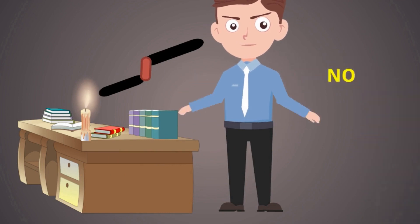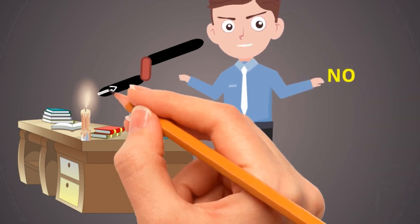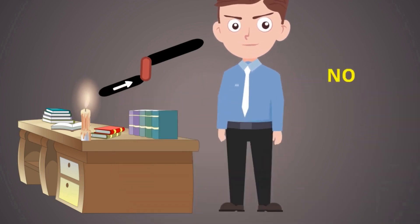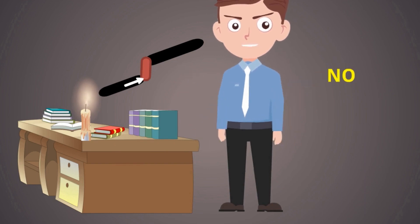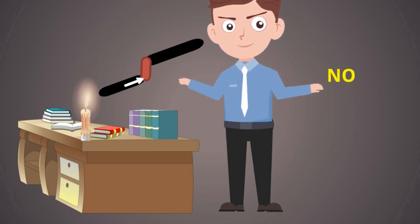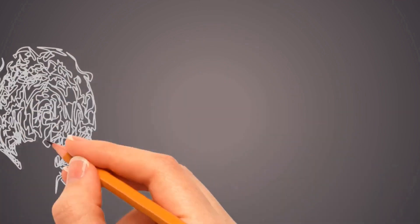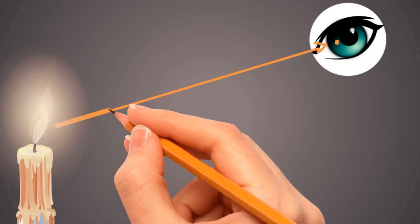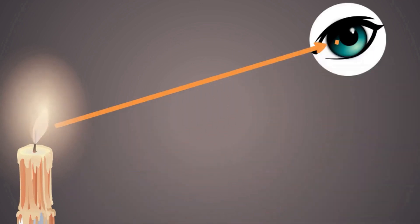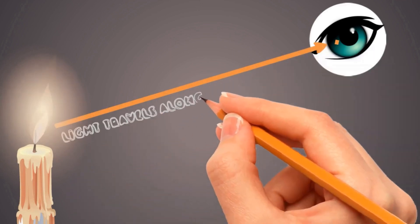But what if we paint the pipe? Are you able to see? No, we will not be able to see, because light comes from the candle and it will be obstructed, so it will not be reaching our eyes. So we can say that light travels in a straight line.